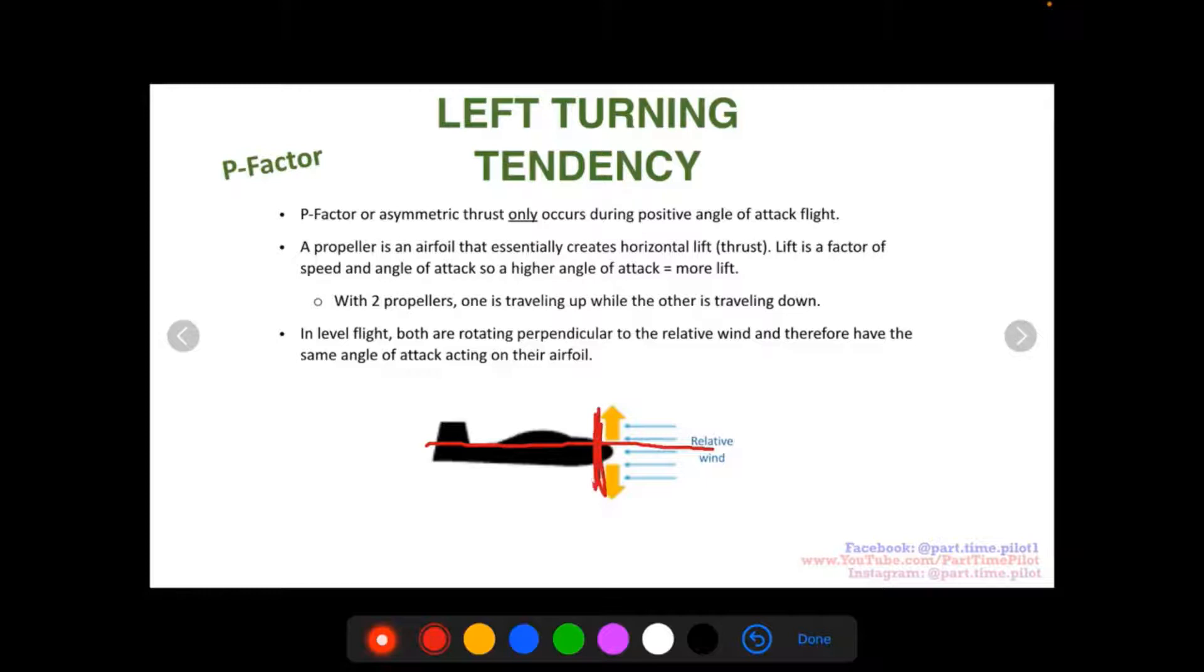So in level flight, both are rotating perpendicular to the relative wind. Okay, so they're rotating on this plane, perpendicular to the relative wind, and therefore have the same angle of attack on the airfoils to this relative wind. So this angle here.